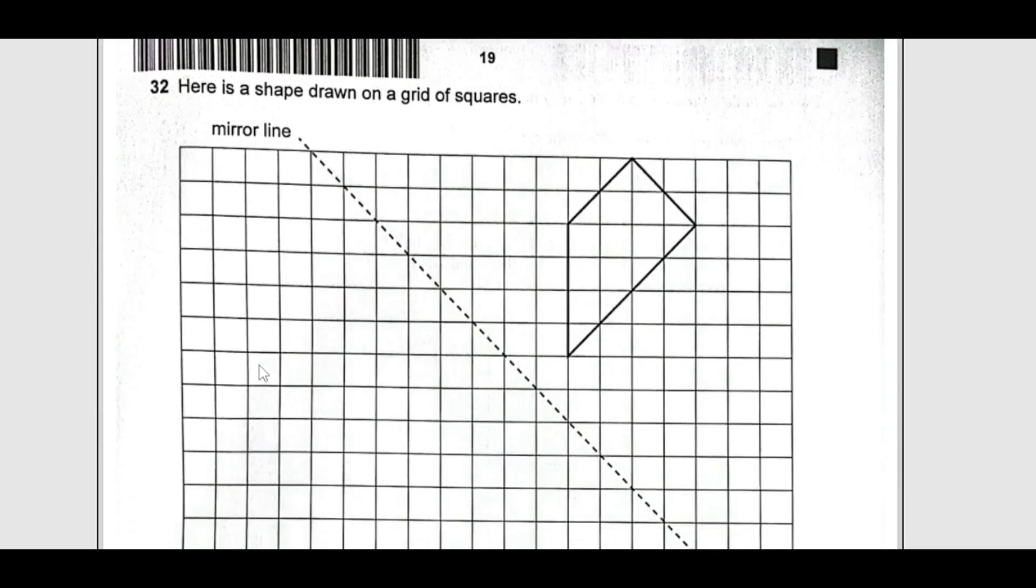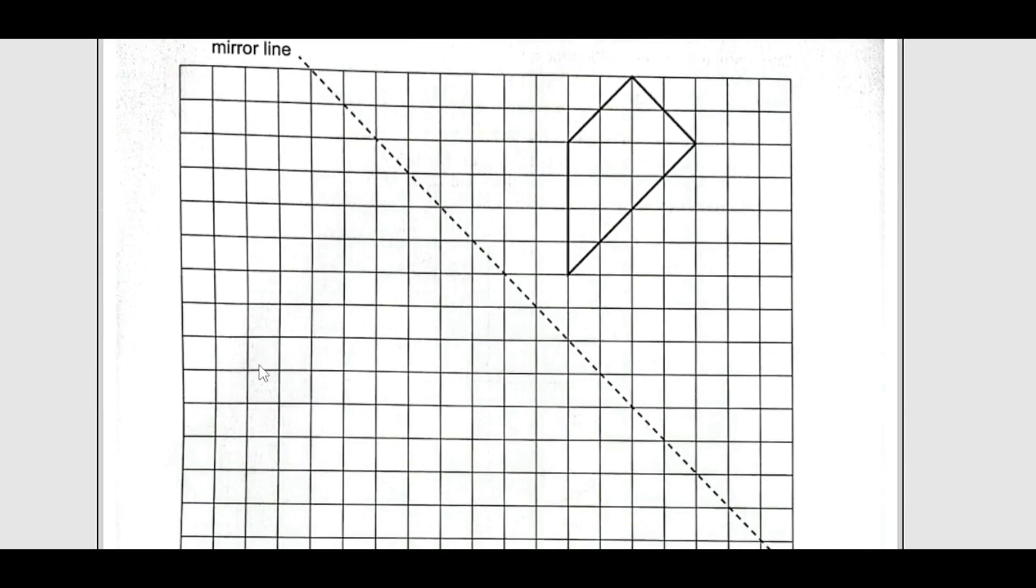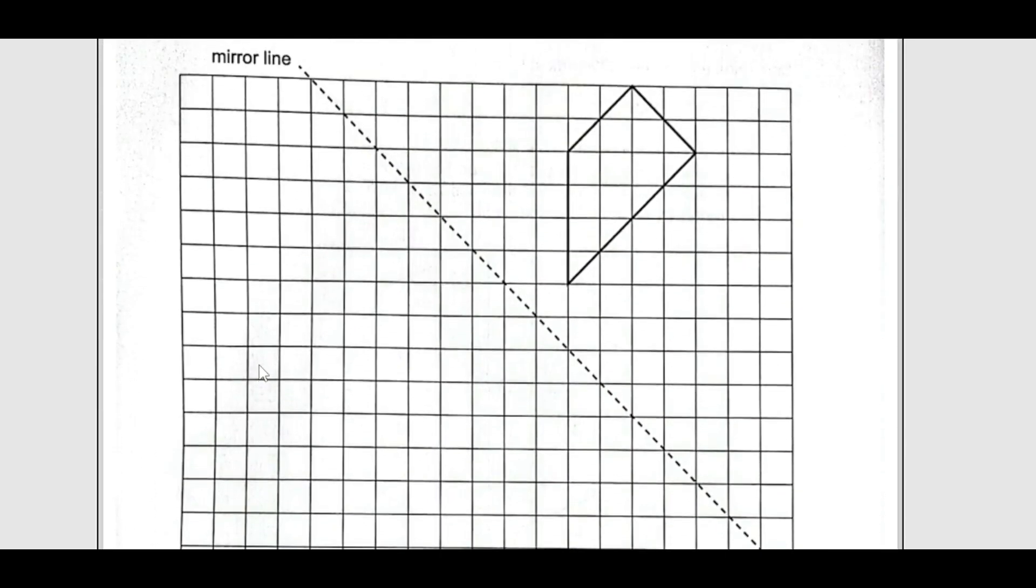Next one, here is a shape drawn on the grid with a mirror line. Draw the reflection. We are going to reflect this shape here. You can see here we have one square. So this point is going to come over here. Then we have from the mirror line 1, 2, 3, 4, 5. So 1, 2, 3, 4, and 5. It is going to be like this. Use a ruler please. Then here we have one diagonal, two diagonals here like this.